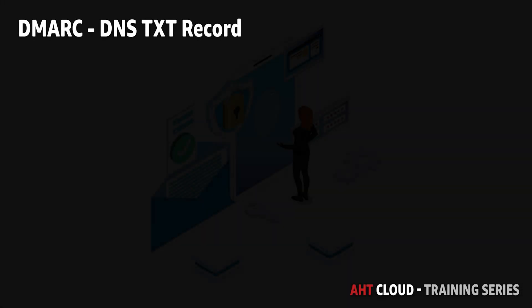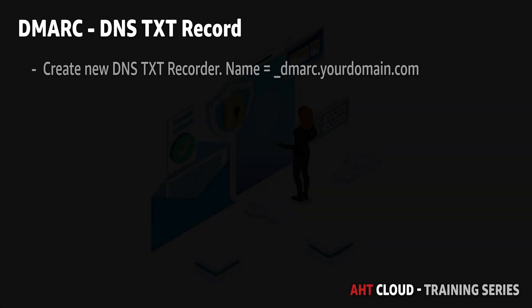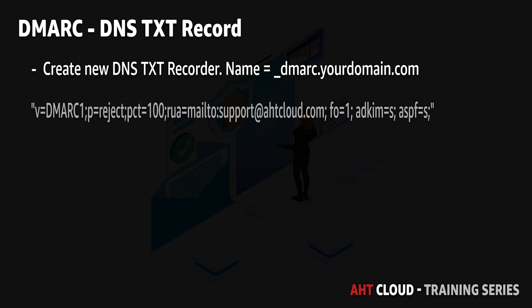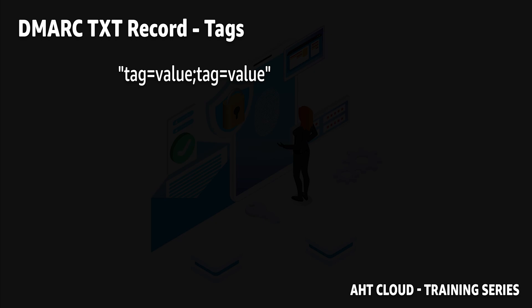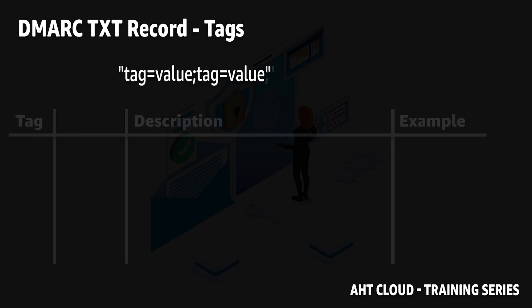You create a DMARC record by creating a text record for your domain named underscore DMARC. For example, this is what the value of a DMARC text record could look like. The syntax for a DMARC record is basically a combination of tags separated by semicolons.